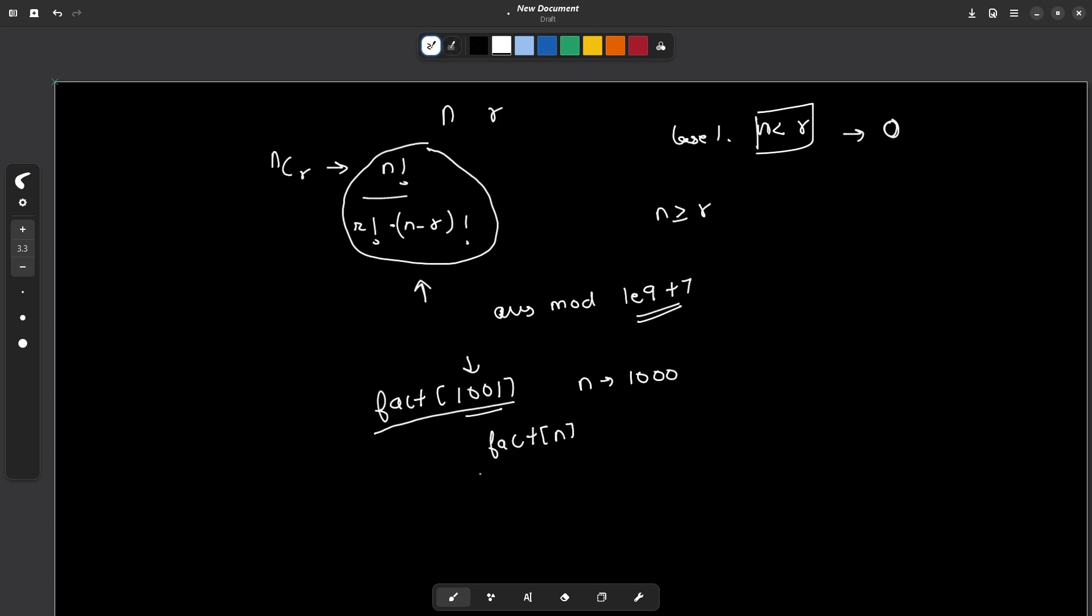Once we have the values of all factorials, our next task is to calculate this particular value: fact of n upon fact of r into fact of n minus r. This is not very difficult.